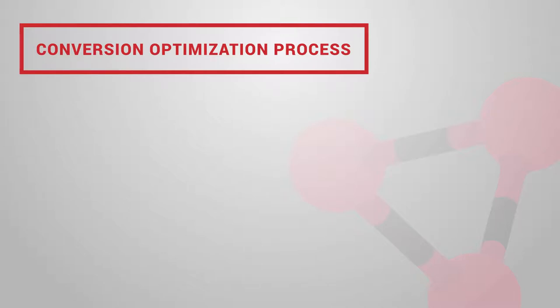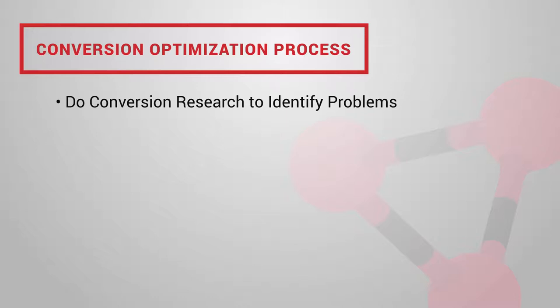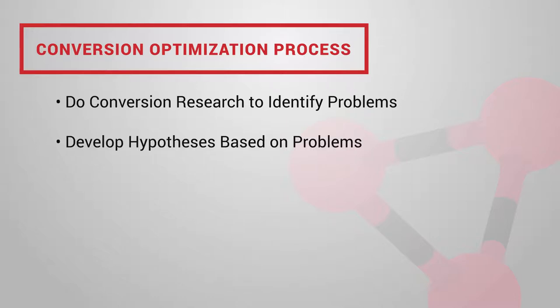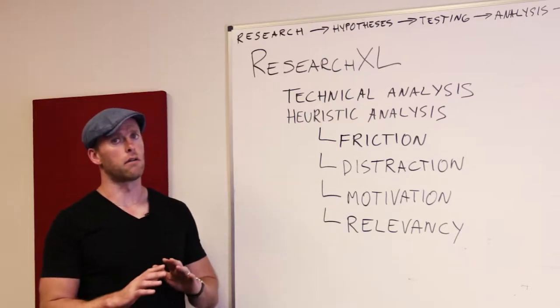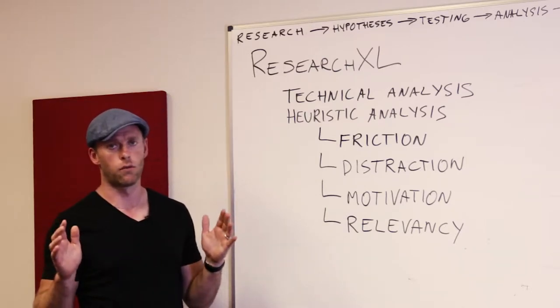The conversion rate optimization process always starts with conversion research — you figure out what the problems are, where they are, and why. Once you have a list of problems, you turn them into hypotheses: based on data XYZ, if we change this and that, we expect to change this metric. You turn hypotheses into tests, run A/B tests, analyze results, maybe implement or discard, and then go back to step one: conversion research. It always starts with research. There's no one right way, but I recommend adopting the ResearchXL framework.